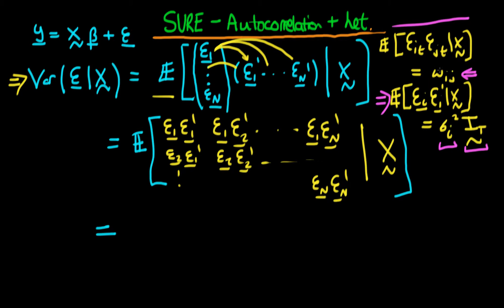Because of this non-zero correlation between the error of individual i and individual j, these off-diagonal elements aren't necessarily going to be equal to zero, which is suggestive of autocorrelation. Similarly, these diagonal components aren't necessarily constrained to have the same variance. Even though I've assumed for each individual there is a variance given by σᵢ², I haven't assumed it was just σ². So σᵢ² can vary between individuals, meaning the system doesn't satisfy the conditions of no autocorrelation and homoscedastic errors.